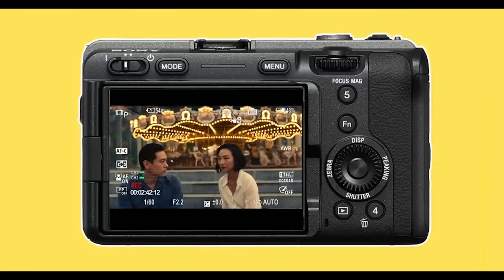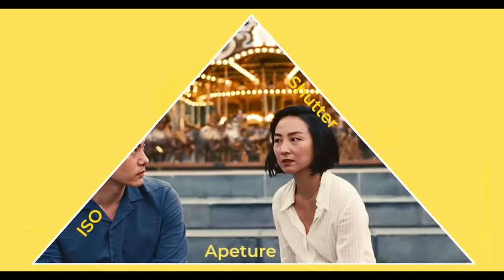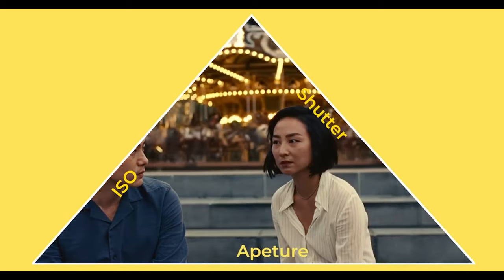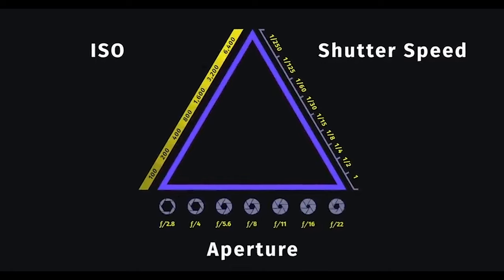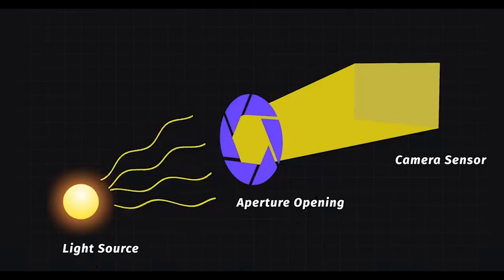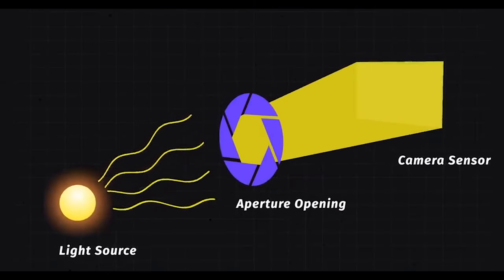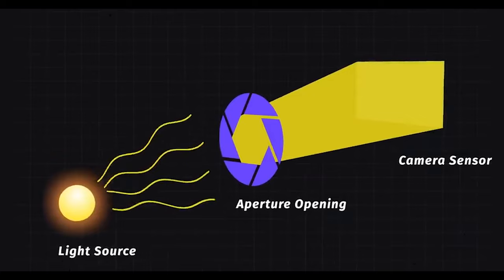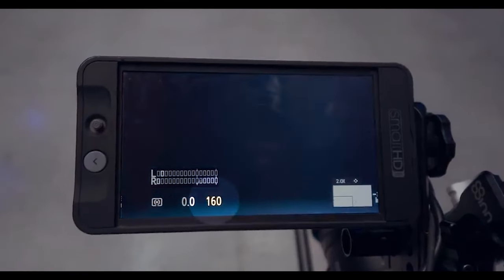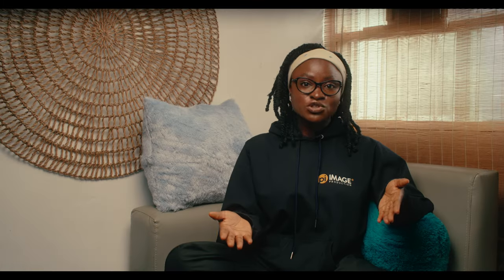ISO controls how much the camera amplifies the incoming light to achieve the desired exposure in a given scene. Of the three, aperture and shutter speed both physically control the amount of light let into the camera. Aperture is like the pupil of an eye of the camera — an adjustable opening in the lens that controls how much light the camera lets in and how sharp or blurry the background in a shot looks. The shutter speed controls the amount of time light will hit the sensor.